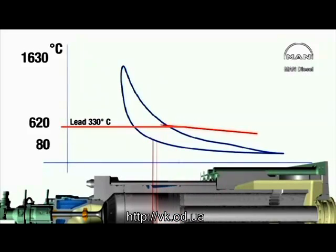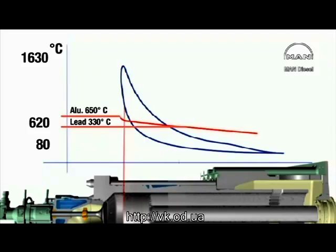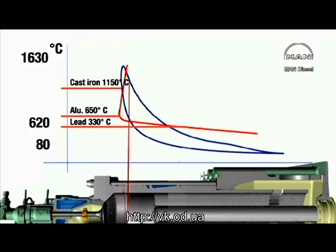During the first part of combustion, the temperature reaches the melting point of aluminium. Shortly after that, the temperature reaches the melting point of cast iron. The high temperatures in the cylinders even exceed the melting point of steel.